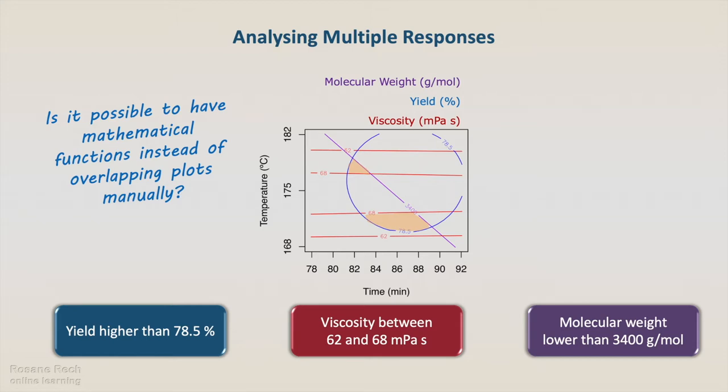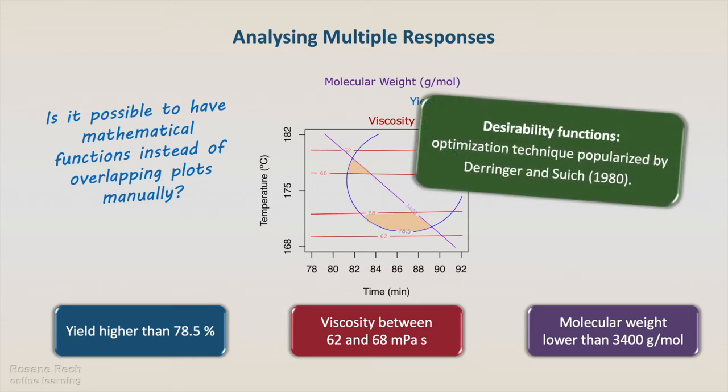One useful approach is to use the simultaneous optimization technique popularized by Derringer and Suich in 1980. Their procedure makes use of what is called desirability functions.